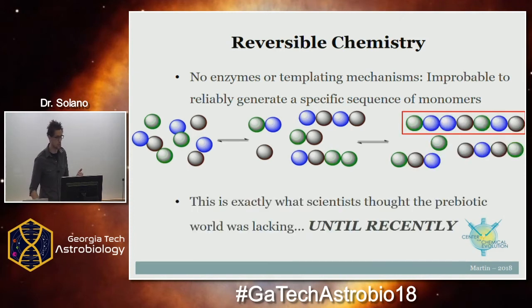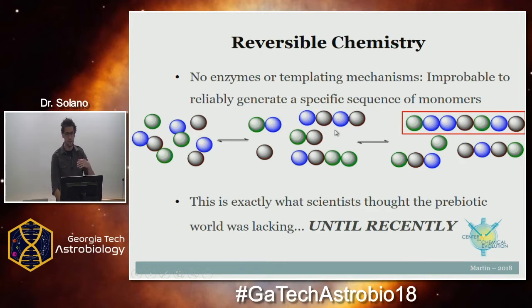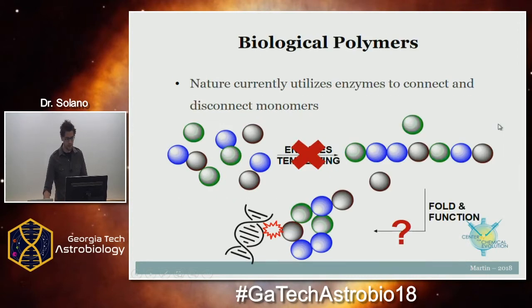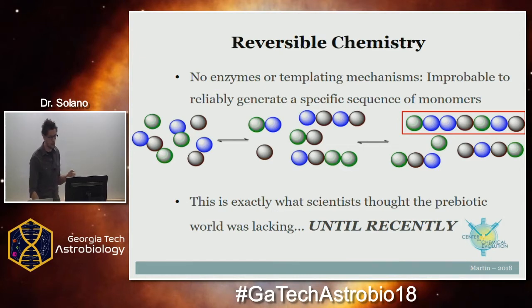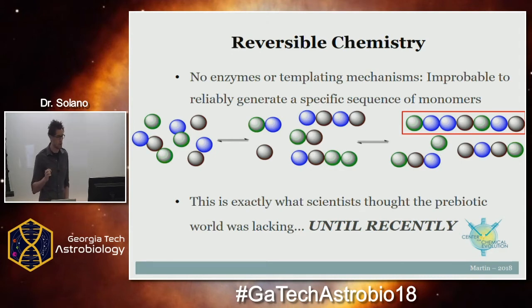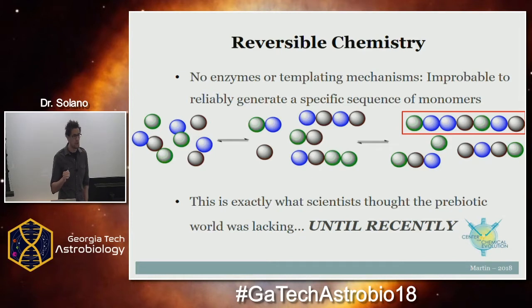What you really need, in the absence of an enzyme or biological system, is reversible chemistry. If these monomers are floating around together, they can stitch together and form a bunch of different sequences, but then break apart and restitch in a different way — sampling many different sequences from the same pool of monomers, recycling them. This has been a problem in particular for peptide chemistry on the prebiotic earth, but recently collaborators in the Center for Chemical Evolution have come up with a way we think we can achieve this.